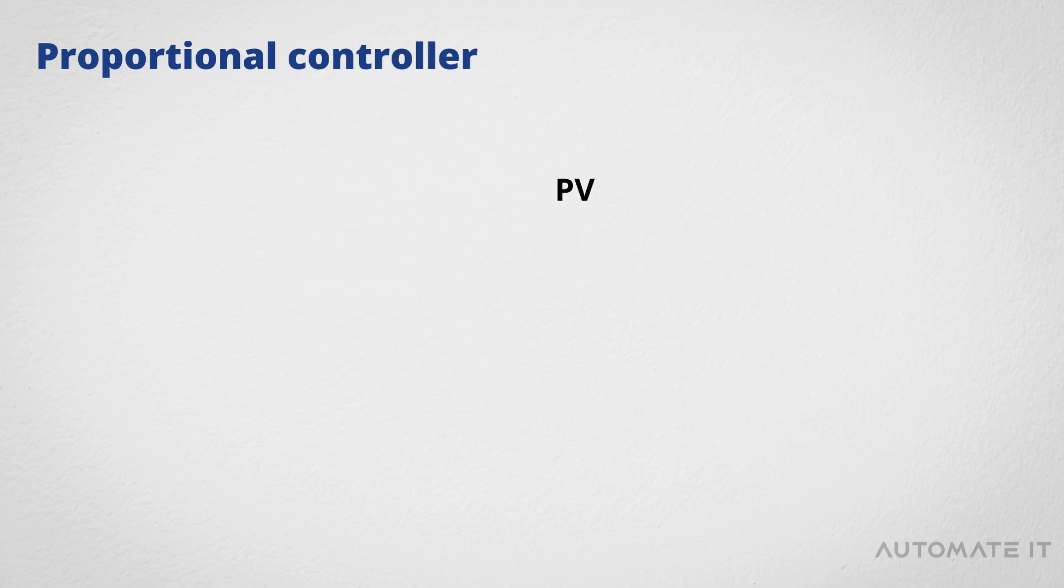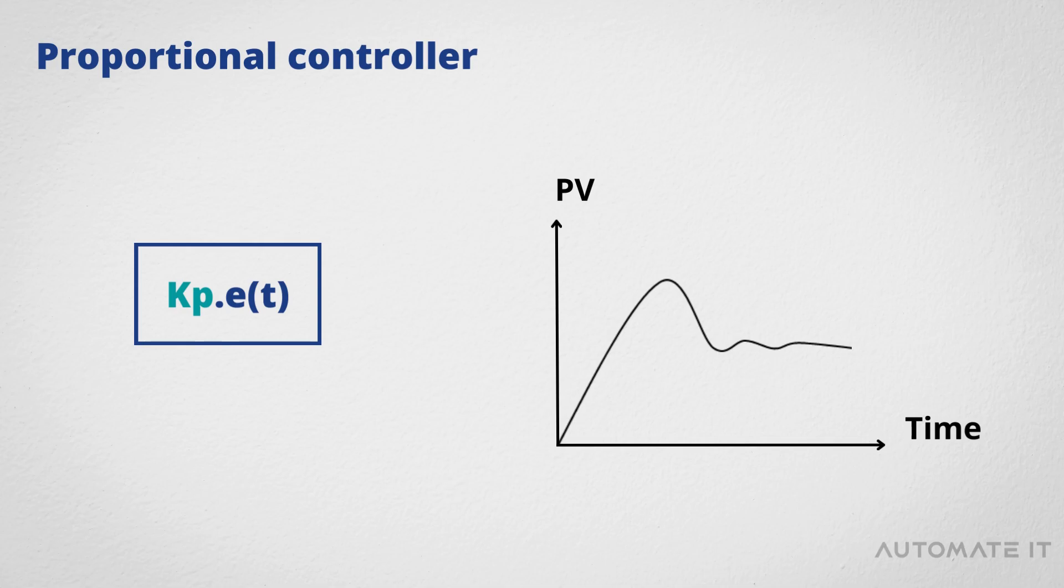A proportional controller provides stable operation but always maintains the steady-state error. There always exists an offset between the process variable and setpoint.